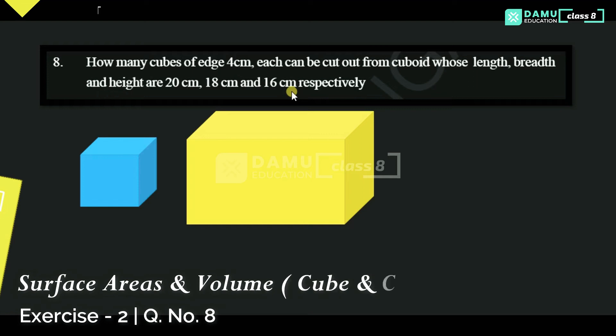So in this module, we are going to discuss how many cubes of edge 4 cm each can be cut out from a cuboid whose length, breadth, and height are given.